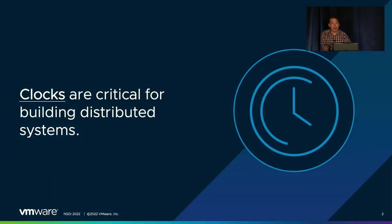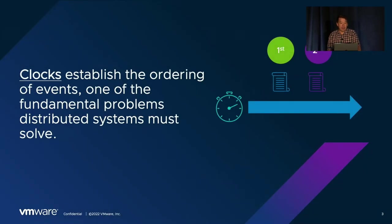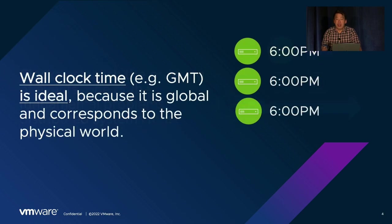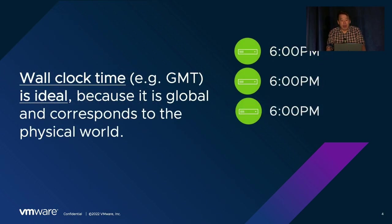So why should we care about clocks? They're critical for building a distributed system. One of the key problems in a distributed system is agreeing on the order of events, which is exactly what a clock allows us to do. In an ideal world, we would use wall clock time — it's the same everywhere after time zone adjustments, and we could even order real-world observations based on it.